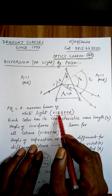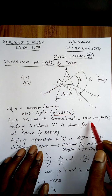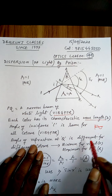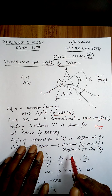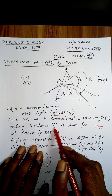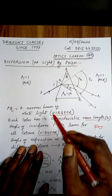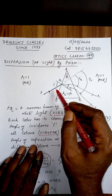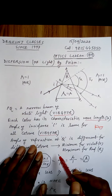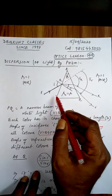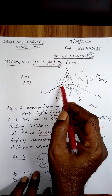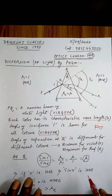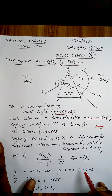Each of these seven colors has its characteristic wavelength. This wavelength is different for different colors. The angle of incidence I is the same for all the colors, since this consists of all colors called white light. So I is same, but they are refracted at Q at different angles of refraction because their speeds are different in a glass medium.